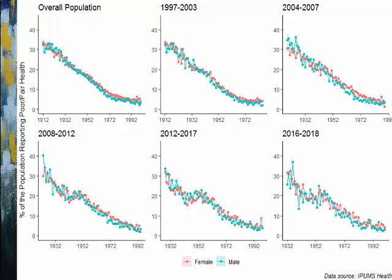When we analyze the way people from different cohorts report their health across different periods of data collection, we observe patterns consistent with those discussed before. The pattern of self-reporting is consistent across different data collection periods and when different cohorts are considered.